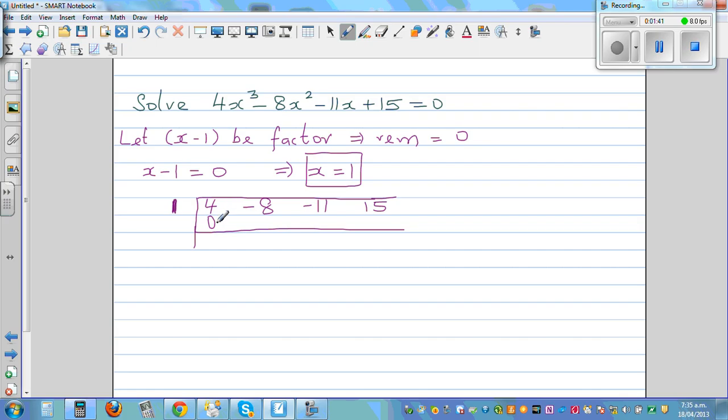And here you have to add these two numbers. 4 plus 0 is 4. And you multiply these two numbers. 1 times 4 is 4. You multiply these two numbers and write it here. And then you have to add these two numbers. So negative 8 plus 4 is negative 4.